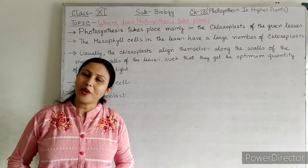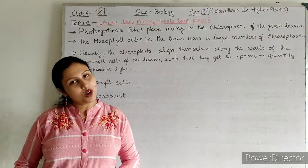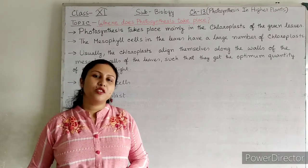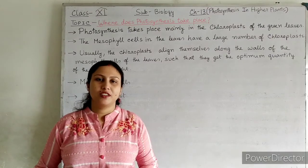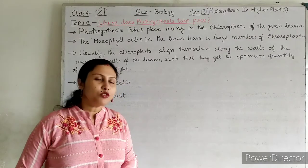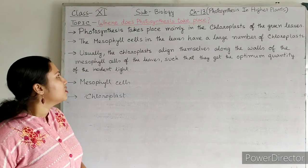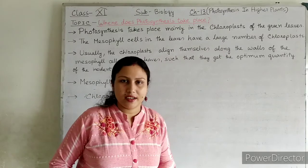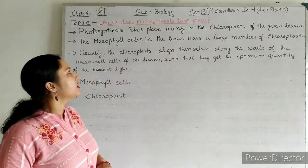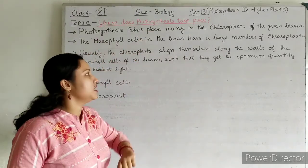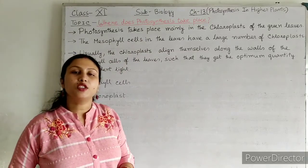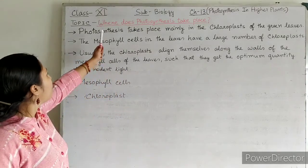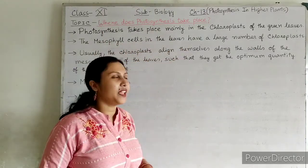Hello students, how are you all? I hope all of you are fine at home. Today students, we will start a new chapter. Our new chapter is chapter number 30, that is Photosynthesis in Higher Plants, which is under class 11 subject biology. And the topic which I am going to teach you from this chapter is: where does photosynthesis take place?